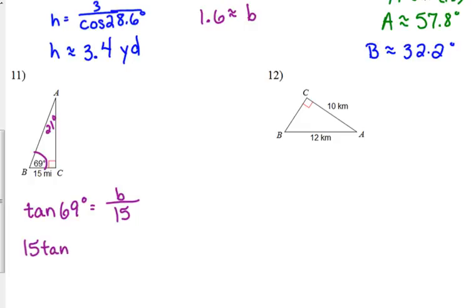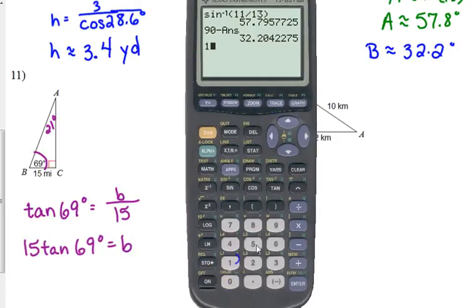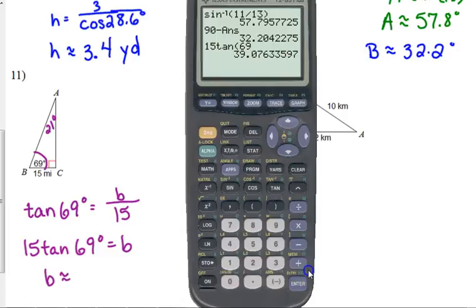So 15 tangent of 69 is equal to our side B. So side B is approximately 39.1 miles.